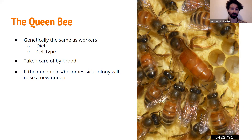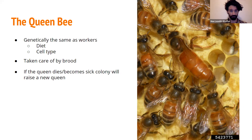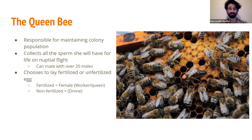Royal jelly is produced by young nurse bees' hypopharyngeal glands — it is a very nutritious substance. A queen's main job is to maintain the colony population. Once a virgin queen emerges from her cell, she'll go on a nuptial flight and travel to a drone congregation area to collect the sperm she'll use for her entire life, storing it in an organ known as a spermatheca. When laying an egg, she chooses whether to fertilize it: fertilized eggs become female workers, unfertilized eggs become drones.